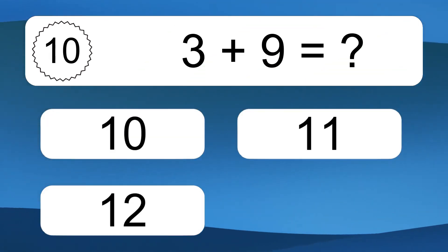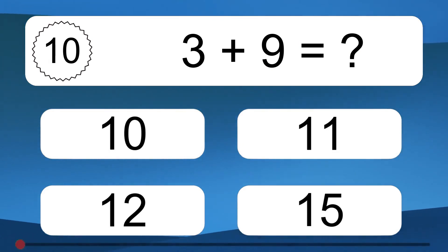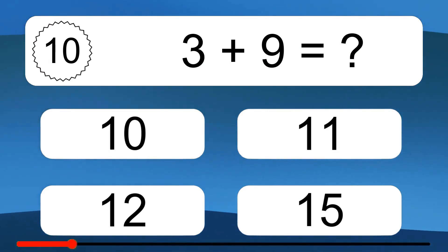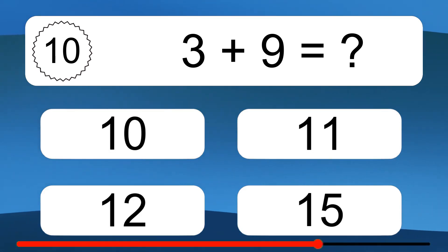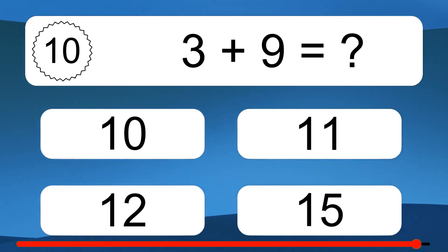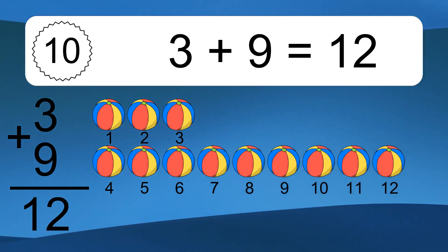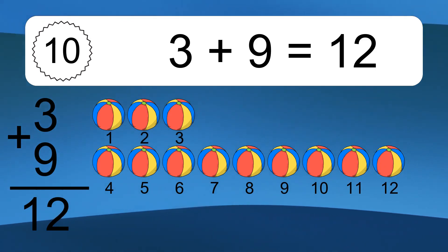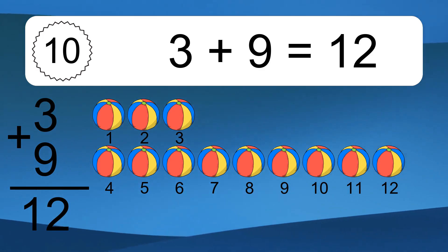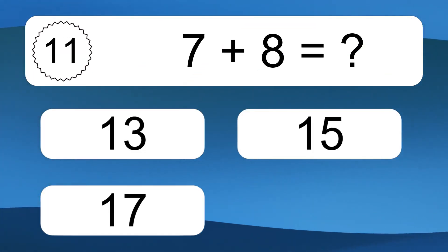3 plus 9 equals what? 3 plus 9 equals 12. Let's count it: 1, 2, 3, 4, 5, 6, 7, 8, 9, 10, 11, 12. 7 plus 8 equals what?